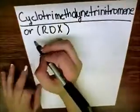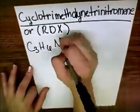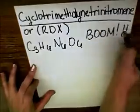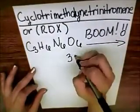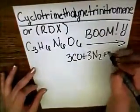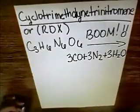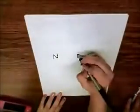Its balanced chemical equation of how it decomposes: C3H6N6O6 into carbon monoxide, nitrogen or N2, and water. Right there. Balanced chemical equation.